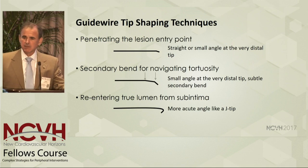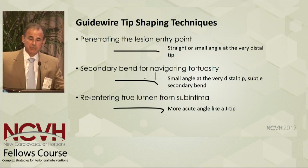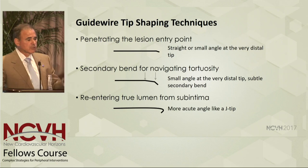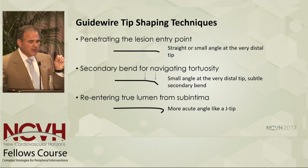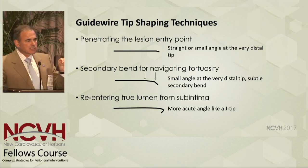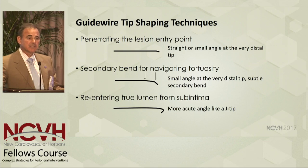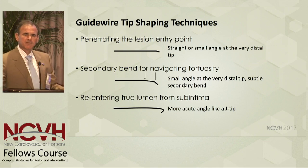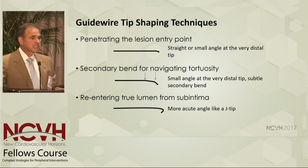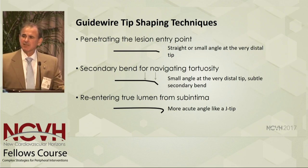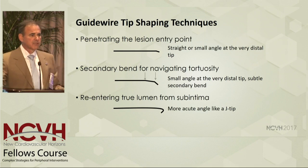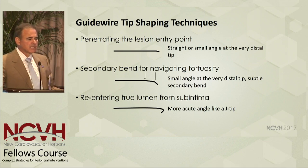How you shape the wire determines how it performs, as well as whether you use a support catheter. If we want to penetrate a total occlusion, we really want to use either a straight wire or, most of the time, a very small angle at the tip at about a 45-degree bend, because this allows us with rotation back and forth to have greater penetrance and go through a lesion. If there's a lot of tortuosity, we like to add a second bend for better steerability. In cases of long total occlusions or densely calcific lesions where it's almost impossible to stay true luminal, we may wish to make a more acute bend, allowing a J-tip to go through the lesions and ultimately re-enter.